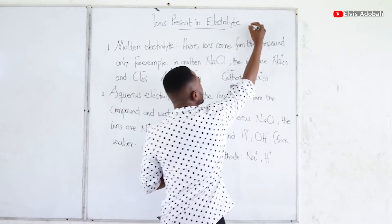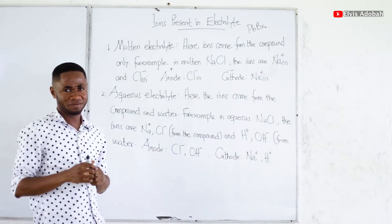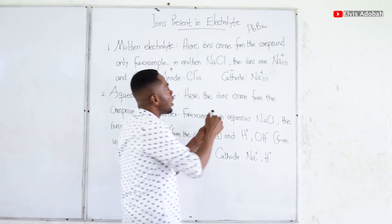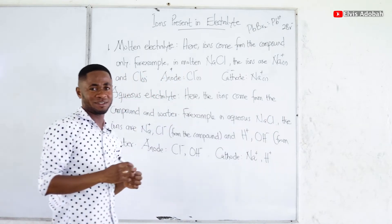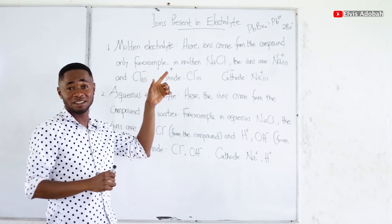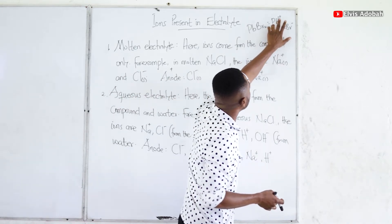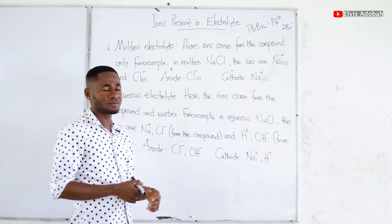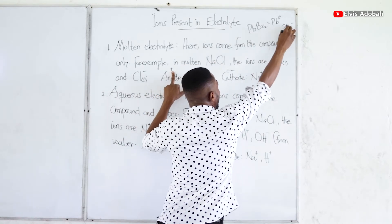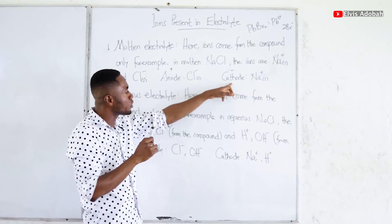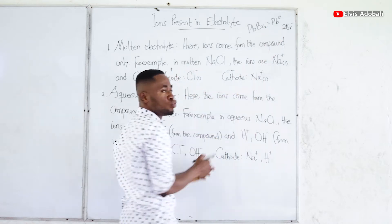Imagine you have molten PbBr2, lead(II) bromide, molten. When we melt this, we are going to get lead(II) ions and 2 bromide ions. So in such an electrolyte, the ions present are Pb2+ and Br-. The anode is positively charged, so it is going to attract the negatively charged particles, which are the bromide ions. And the cathode, which is negatively charged, will attract the positive part, which is the Pb2+.